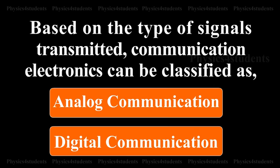Based on the type of signals transmitted, communication electronics can be classified as Analog Communication and Digital Communication.